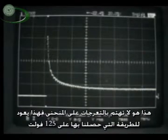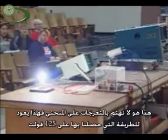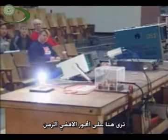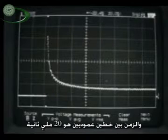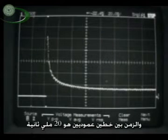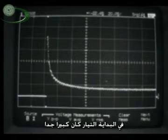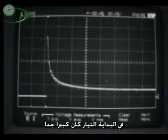Forget this little ripple that you see on it. It has to do with the way that we produced 125 volts. And so you see here horizontally time, the time between two adjacent vertical lines is twenty milliseconds. And so indeed, very early on, the current surged to a very high value.